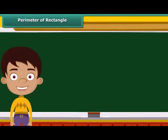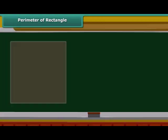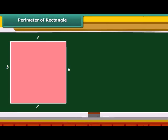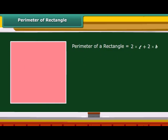Let us now calculate the perimeter of a rectangle. A rectangle is a four-sided geometric figure whose opposite sides are equal. Therefore, the perimeter of a rectangle is twice its length plus twice its breadth. We can rearrange and say that the perimeter of a rectangle is twice the sum of its length and breadth.